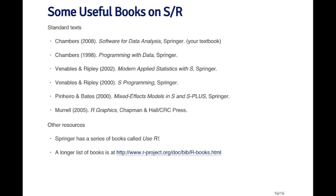Some classic texts in this area: the books by John Chambers — Software for Data Analysis and Programming with Data, both published by Springer. Two books by Bill Venables and Brian Ripley: Modern Applied Statistics with S and S Programming — both very relevant for R programming despite the S in the title. There's also Mixed Effects Models in S and S-Plus by Pinheiro and Bates, useful for R programmers. Paul Murrell, who designed the R graphics system, has written R Graphics, now in its second edition. Springer also has a Use R series of shorter books on using R for different application areas, and there's a longer list of books on the R website.